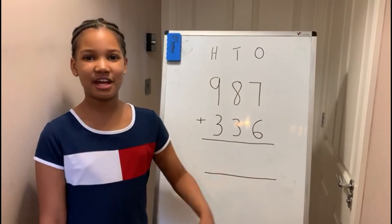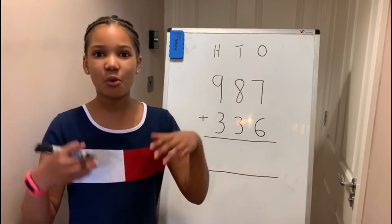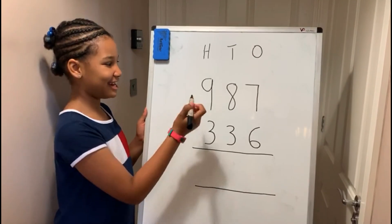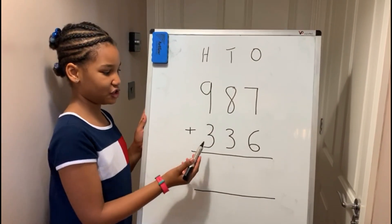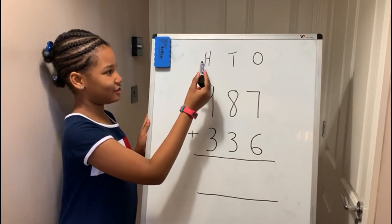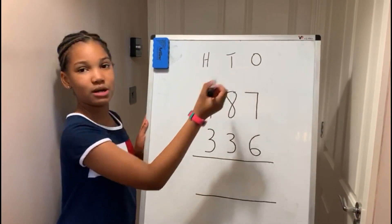Here we have a three-digit number addition with a carryover. Here we have 987 add 336. This is the hundreds, this is the tens, and this is the ones.